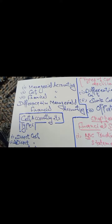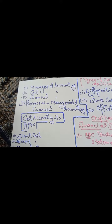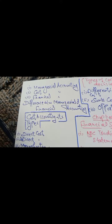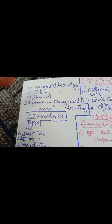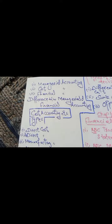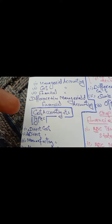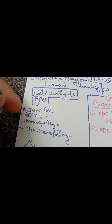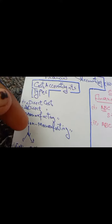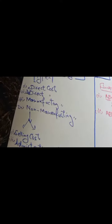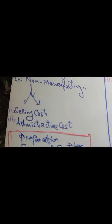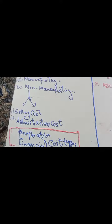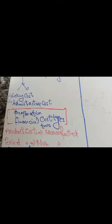BBA accounting semester 3: managerial accounting, cost accounting, financial accounting. Differences between managerial and financial accounting, cost contract cost, indirect cost, manufacturing cost, non-manufacturing cost, selling cost, administrative cost. Financial statements: two types.